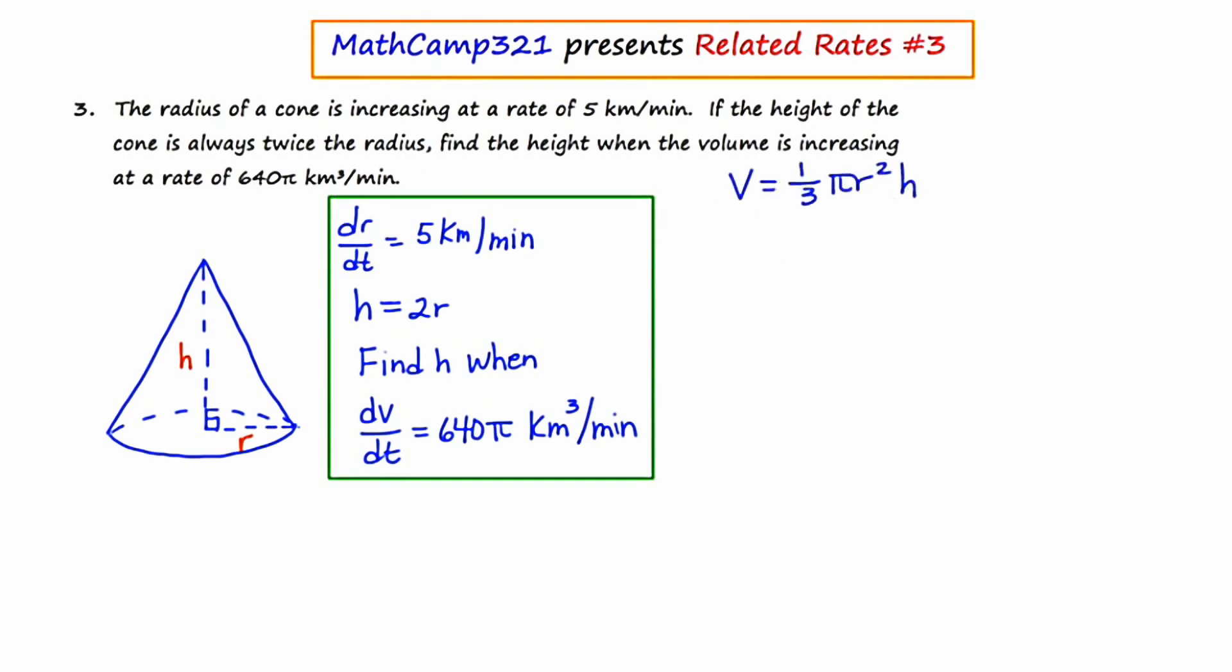So in this problem there are three variables: V, R, and H. And what I want to ask myself is, are all of these variables changing over time? Well, I know that the volume is increasing because it tells me so in the last statement. The volume is increasing at a rate of 640π cubic kilometers per minute. So I know the volume, the V, is changing.